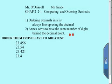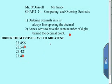For example, our first number is 23 and 456 thousandths. The second number is 23 and 54 hundredths. If we annex the zero, they both now end in the word thousandths, so that makes it a little bit easier. Let's put some zeros down here. Right now all four numbers have three decimal places after them. They're all going to end in the thousandths.